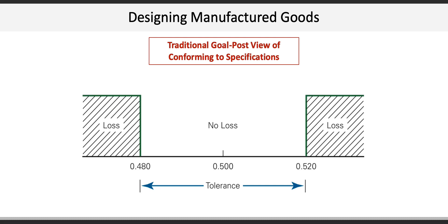The traditional goalpost view identifies a tolerance as literal goalposts, and any size outside those goalposts or acceptable tolerances results in some sort of monetary loss, which could be from lost sales, warranty support, etc. This implies that output only outside the tolerance is completely unacceptable, and that any output within that range, but that still varies from the nominal of 0.50, incurs no loss. Essentially, the goalpost view is an all-or-nothing view in terms of losses.